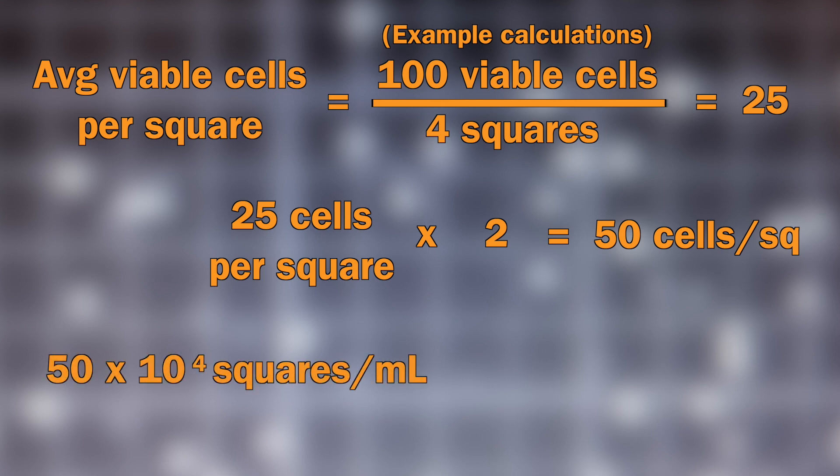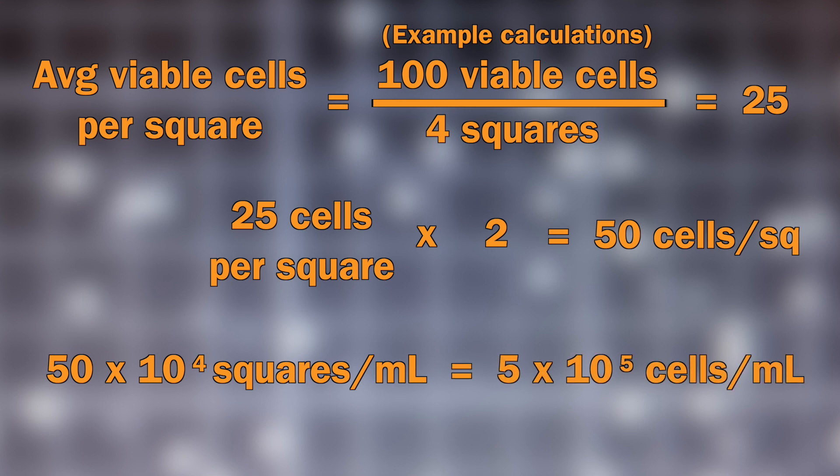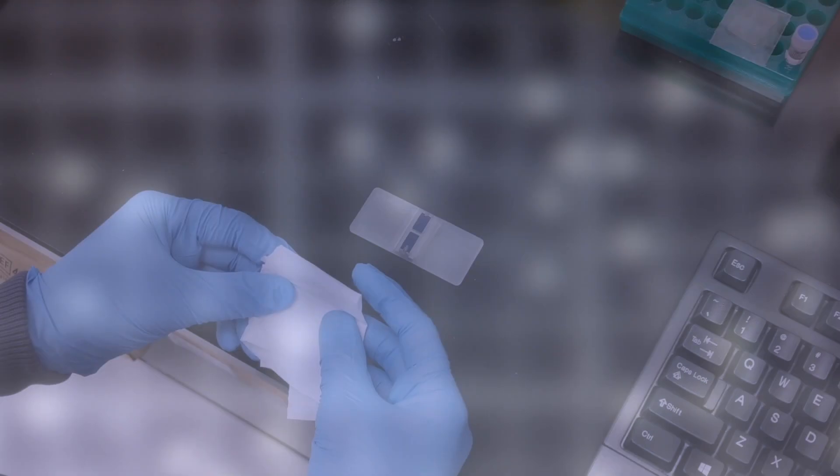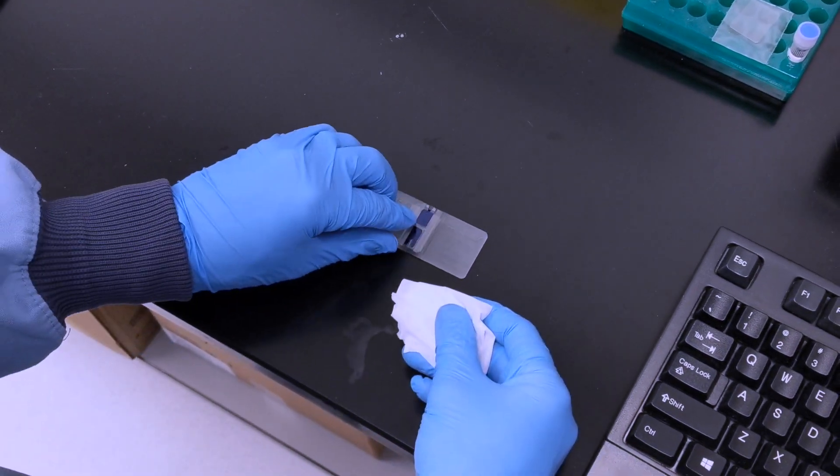Finally, multiply the number above by 10 to the fourth to obtain the number of viable cells per milliliter of media. Now that you know your cell concentration, you are ready to begin your experiments.